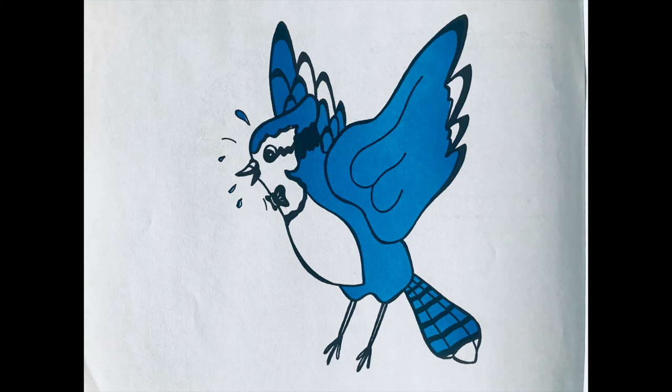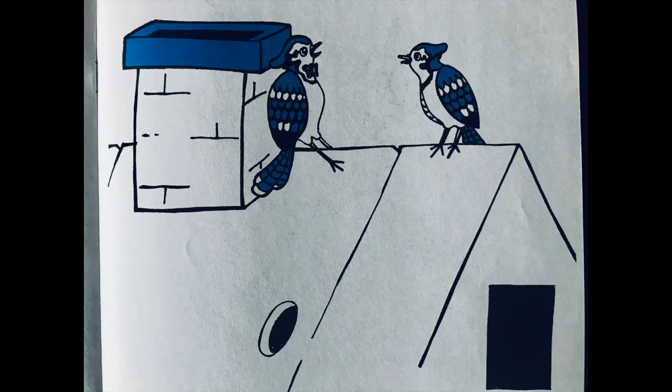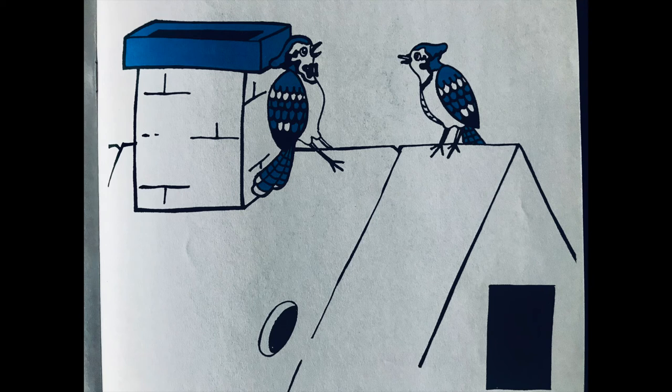He bent down for a look. When his head came up again, he was pale with rage. No sign of the acorns. Not even one. That poor blue jay. He had just enough strength to crawl to the highest part of the roof and lean against the chimney.